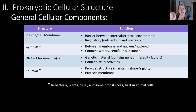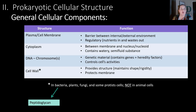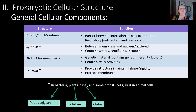Cell walls are found in bacteria, plants, fungi, and some protists. Animal cells do not have a cell wall. In bacteria, the cell wall is made out of peptidoglycan. In plants, the cell wall is made out of cellulose, which we talked about in the chemistry chapter. In fungi, it is made out of chitin, also talked about in the chemistry chapter. So these are all going to be certain combinations of types of sugars — they have a carbohydrate component in these cell walls.